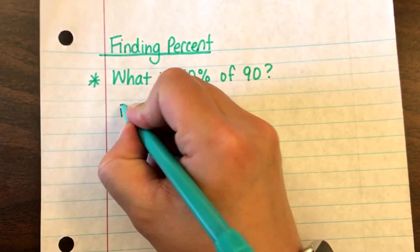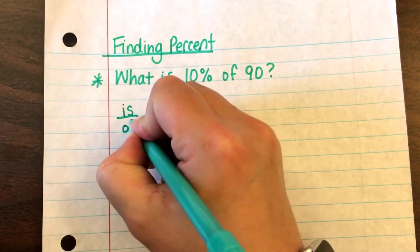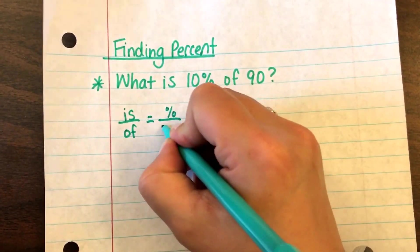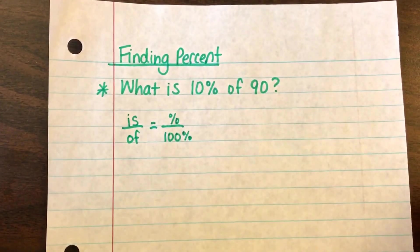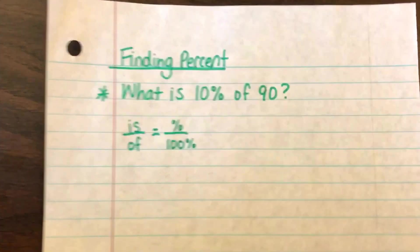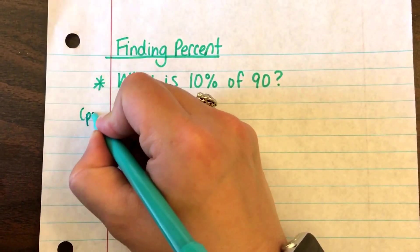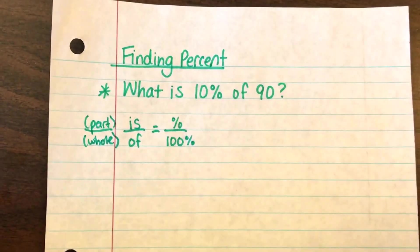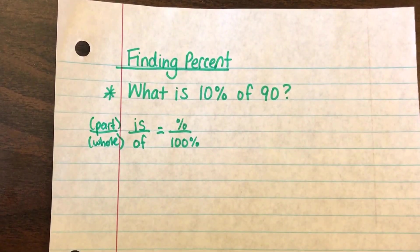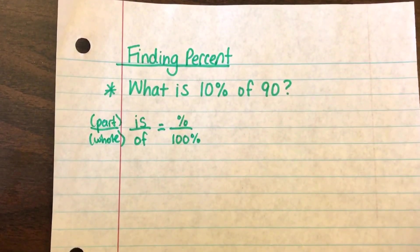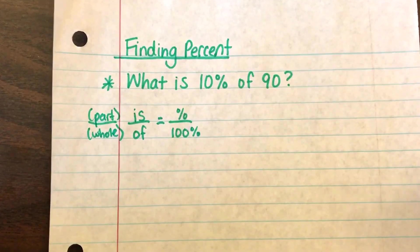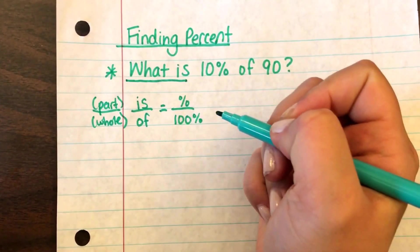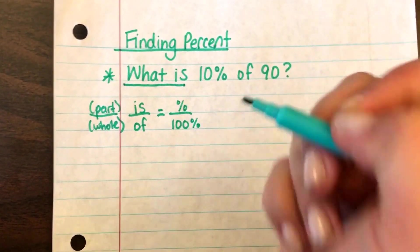To do the proportion, you need to set it up thinking: is over of equals percent over a hundred, or a hundred percent. You also want to remember part over whole. It's very important to think of the wording of the question because that will help you determine which numbers go where in the proportion.